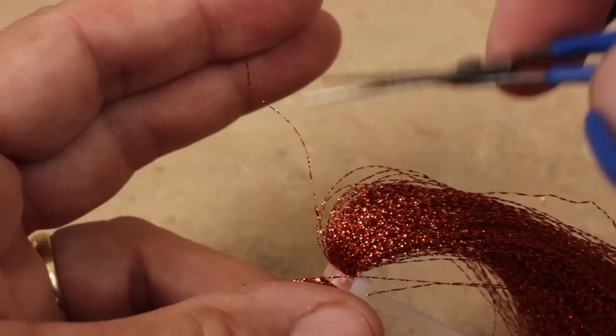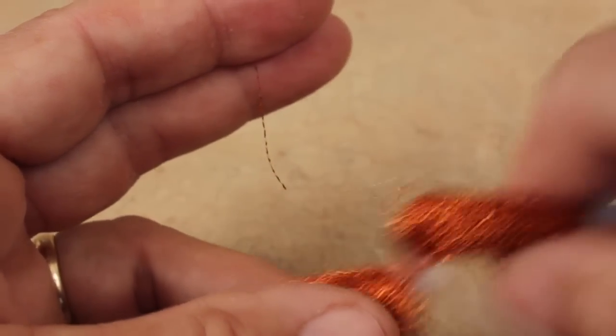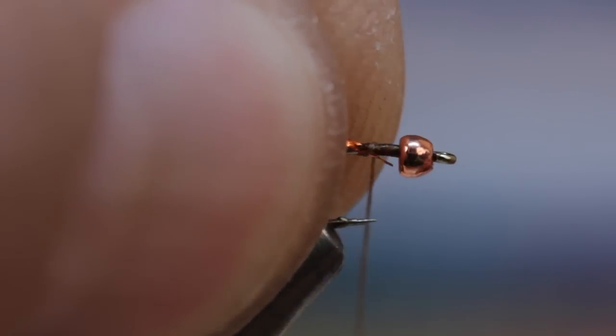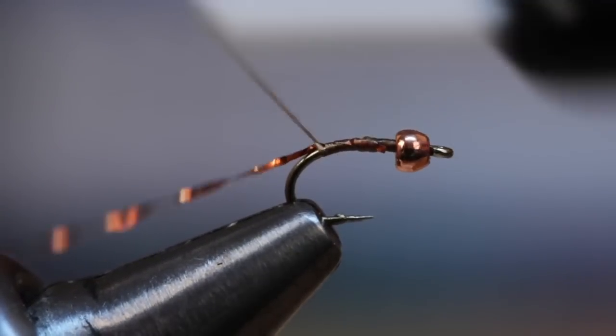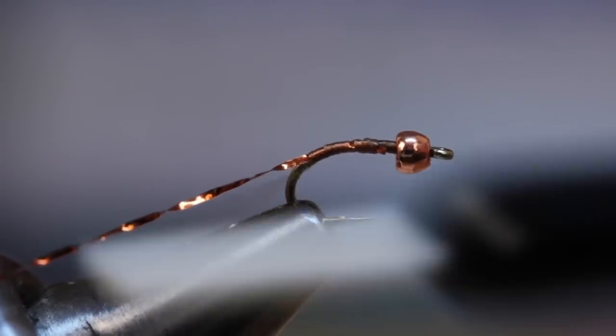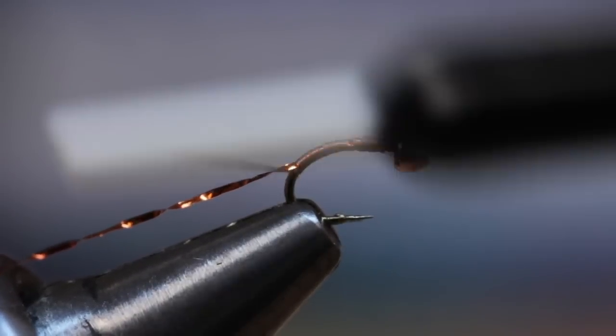Snip a single strand of copper crystal flash free from the hank. This single strand can be used to make numerous flies. Attach one end to the hook shank and take wraps of tying thread rearward to secure the flash to the top of the hook. Go well down into the bend before returning your thread to the tie-in point.